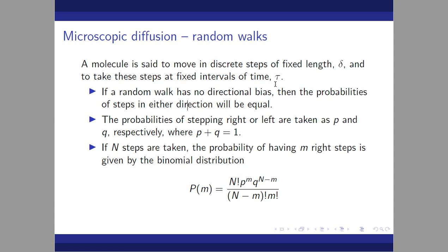A molecule is said to move in discrete steps of fixed length delta, and to take these steps at fixed intervals of time tau. As an analogy, like how we work at one job for a fixed duration then move to another, or like degree stages: undergraduate 4 years, master 2 years, PhD 3 years — that is the fixed time interval.